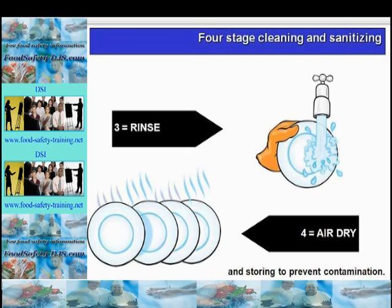Mechanical dishwashing — machines are effective at both disinfection and cleaning. The procedure is: pre-clean by scraping and rinsing, pack the machine efficiently, wash between 49 and 60°C, and a rinse cycle between 82 and 88°C — this rinse cycle also serves as the disinfection cycle. Then remove the racks and allow to air dry, followed by inverted storage.